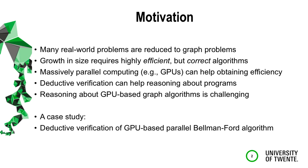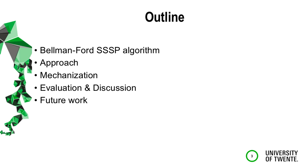We discuss the Bellman-Ford shortest path algorithm, give a pen-and-paper proof for this algorithm, then mechanize this proof in a program verifier tool, show our evaluation and discussion, and conclude with future work.